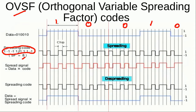Each bit in the spreading code is known as a chip — this one is a chip, this minus one is another chip. So each bit in the spreading code is called a chip: we have 1 here, minus 1 here, again minus 1 here, and so on. When we multiply this spreading code with the data, we see that the rate of the original signal has increased — eight times — because we are multiplying it with a signal having eight times the chip rate. At the receiver we again multiply it with the same spreading signal, and the signal will get de-spread and we will get the original one.